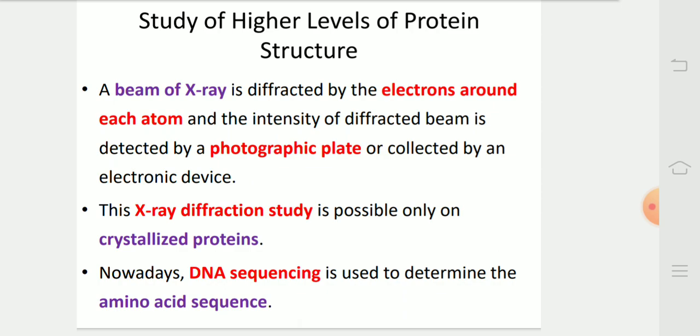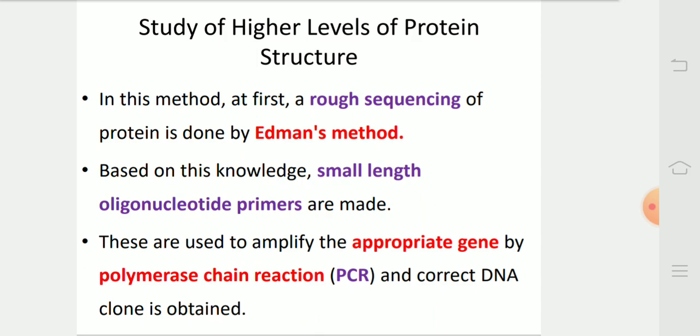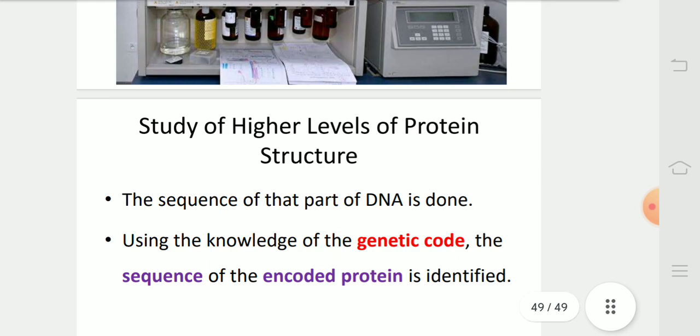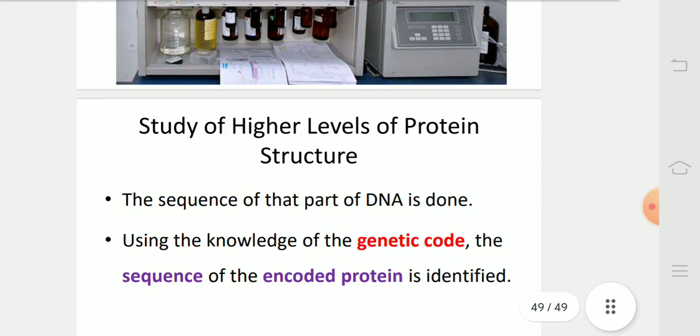Nowadays, DNA sequencing is used to determine the amino acid sequence. In this method, at first, a rough sequencing of protein is done by Edman's method. Based on this knowledge, small length oligonucleotide primers are made. These are also used to amplify the appropriate genes by polymerase chain reaction and the correct DNA clone is obtained. In this diagram, we can see Edman's degradation. The sequence of that part of DNA is done. Using the knowledge of the genetic code, the sequence of the encoded protein is identified.